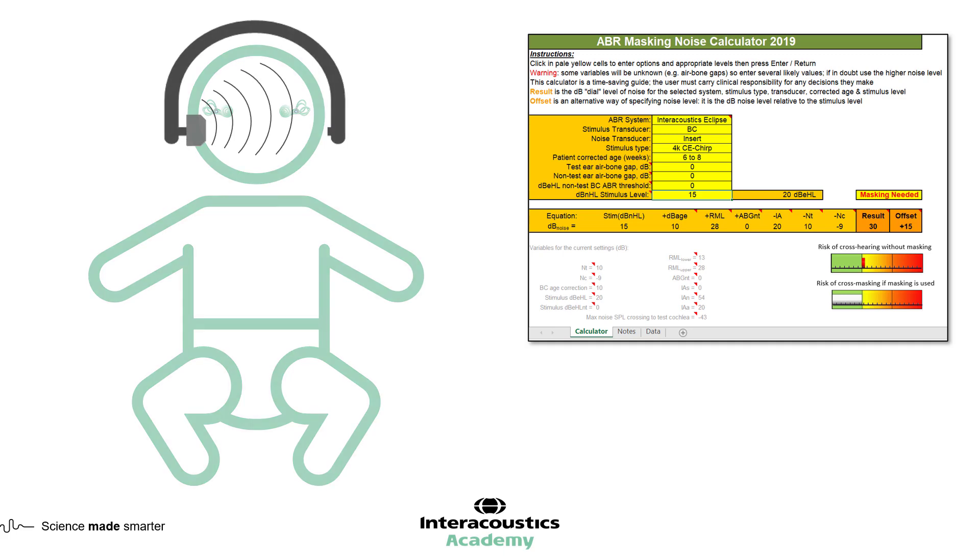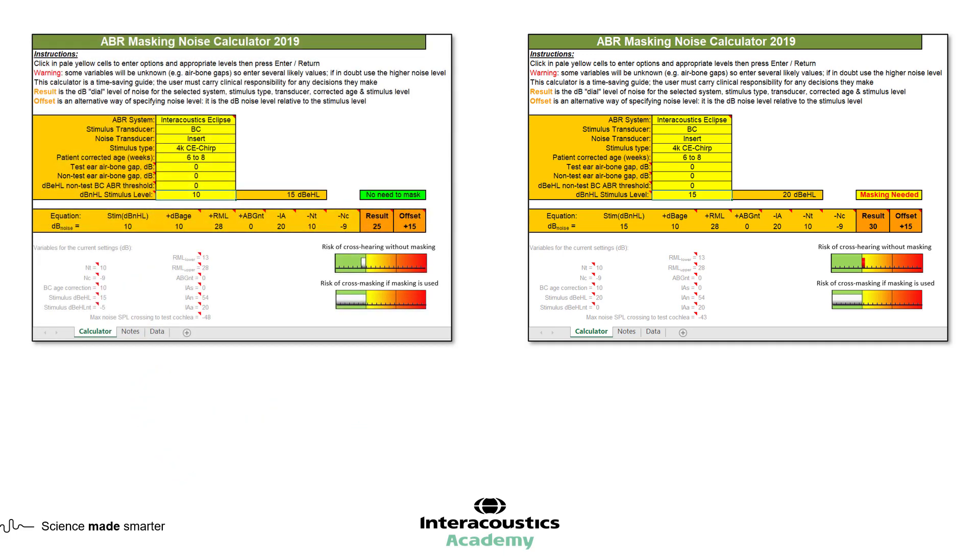A sensible place to start bone conduction testing is at the loudest level within the normal range, which doesn't require masking. This will give you the biggest chance of seeing a response. In the example just given, this would be 10 dB NHL. Remember, the level where masking is not required will vary according to age and stimulus.